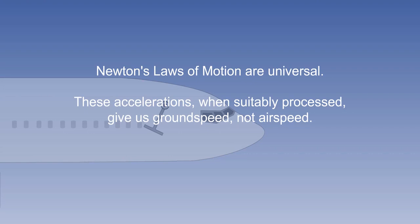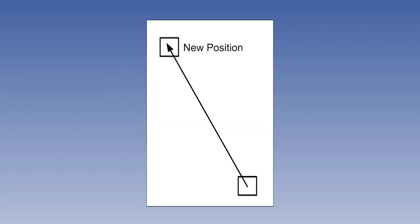Therefore, the acceleration, when suitably processed, gives a measurement of ground speed, not air speed. By knowing where we were when we started and adding up how far we have gone, we can work out where we are now, rather like the odometer of a car.